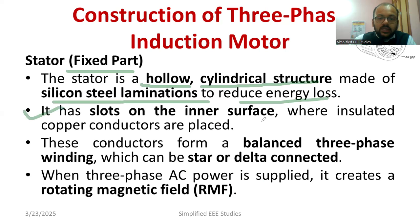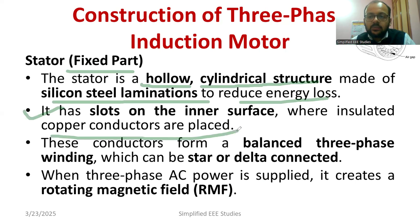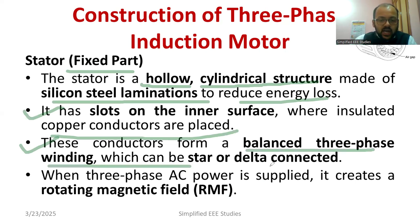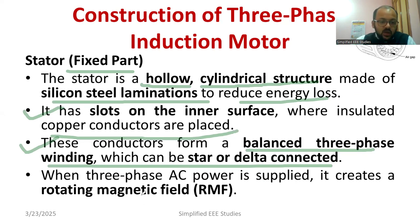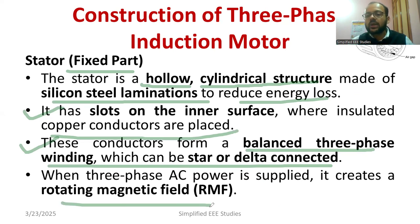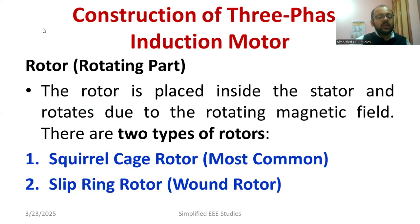The stator has slots on its inner surface, which are insulated, and copper conductors are placed in them with suitable insulation. The stator winding can be done in either a star connection or delta connection. For high voltage and low current applications, we go for star connection; for high current and low voltage, we use delta connection. A rotating magnetic field is generated as soon as supply is provided at the stator side.